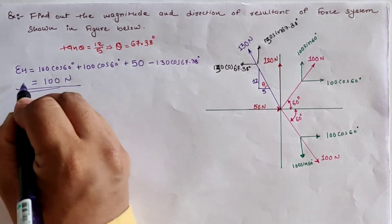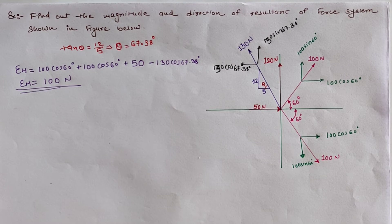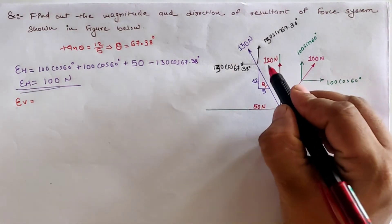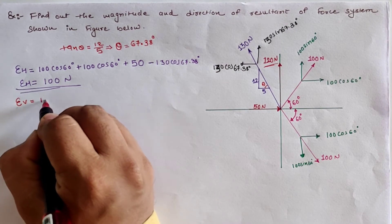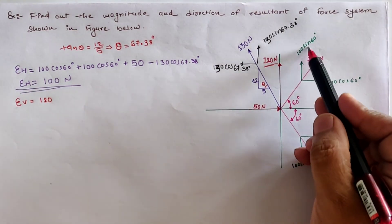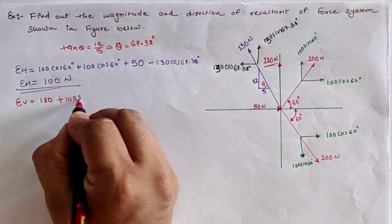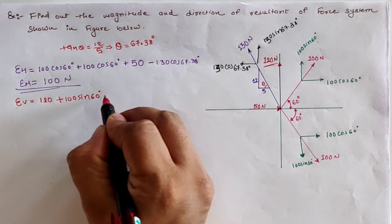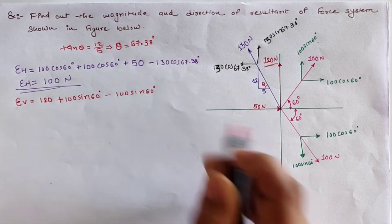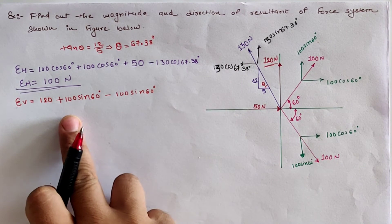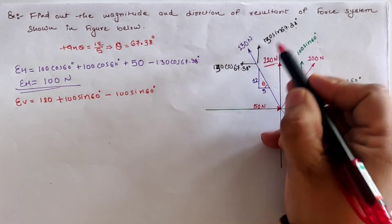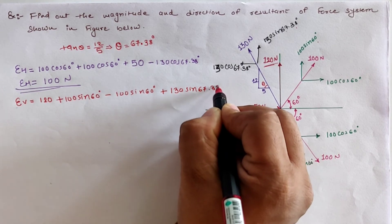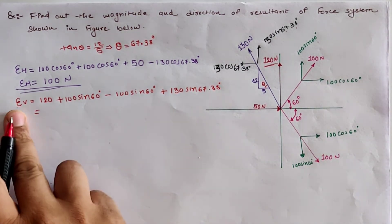For the algebraic summation of all vertical forces, sigma V: the 120 newton upward load is positive, giving plus 120. The first 100 sin 60 is in the positive (upward) direction, so plus 100 sin 60. The second 100 sin 60 is in the downward (negative) direction, so minus 100 sin 60. The 50 newton is horizontal and not included. The 130 sin 67.38 is upward, so plus 130 sin 67.38. Summing all values gives sigma V equals 240 newton.